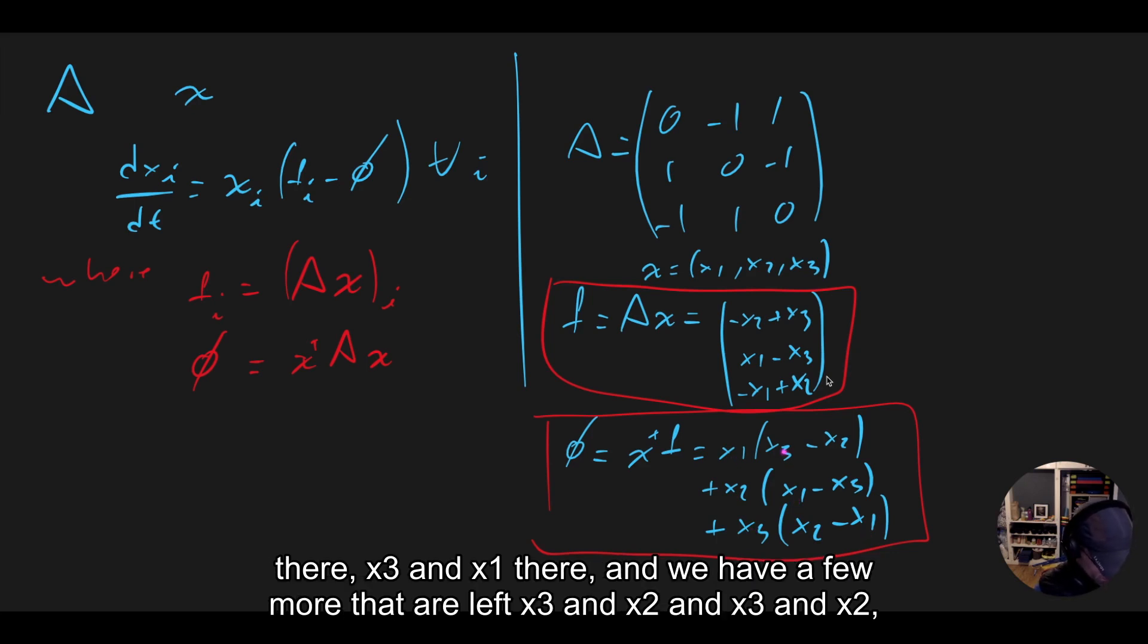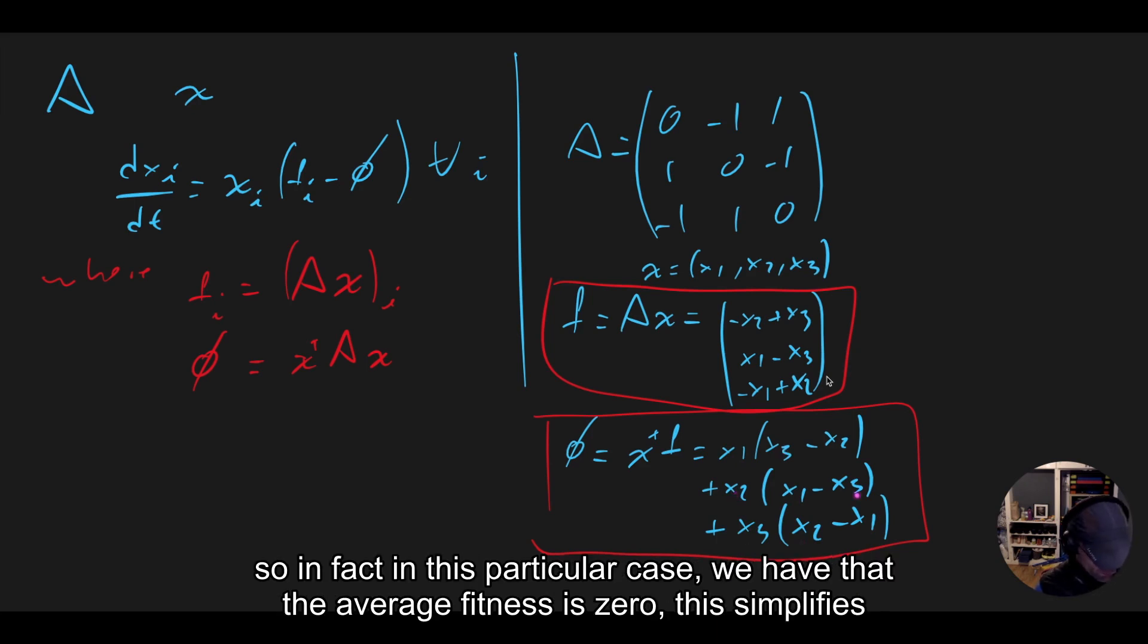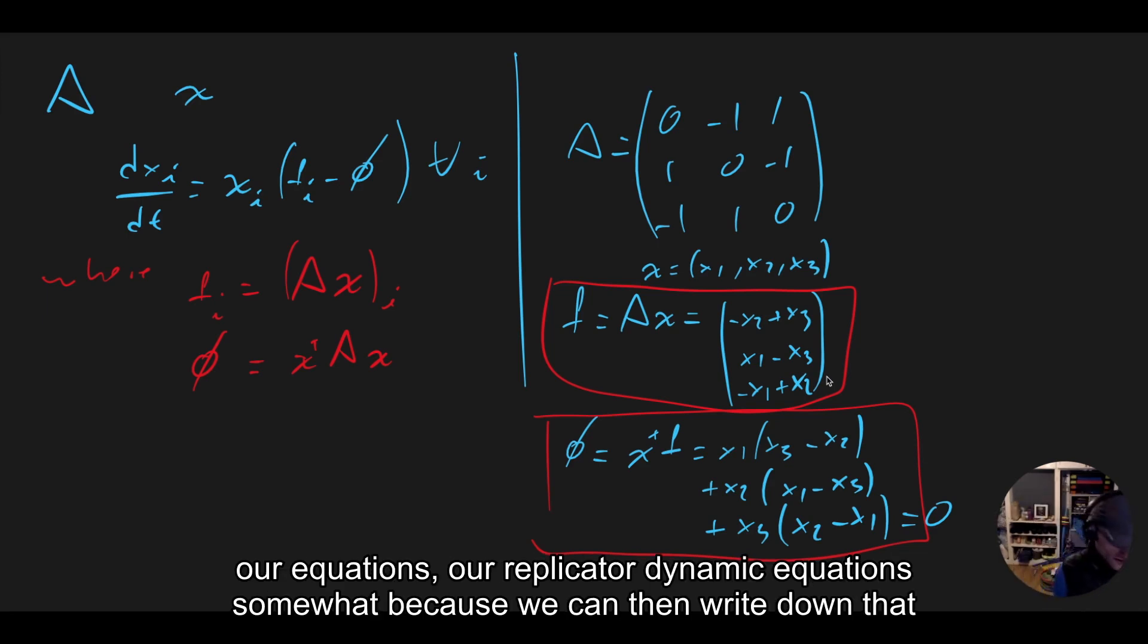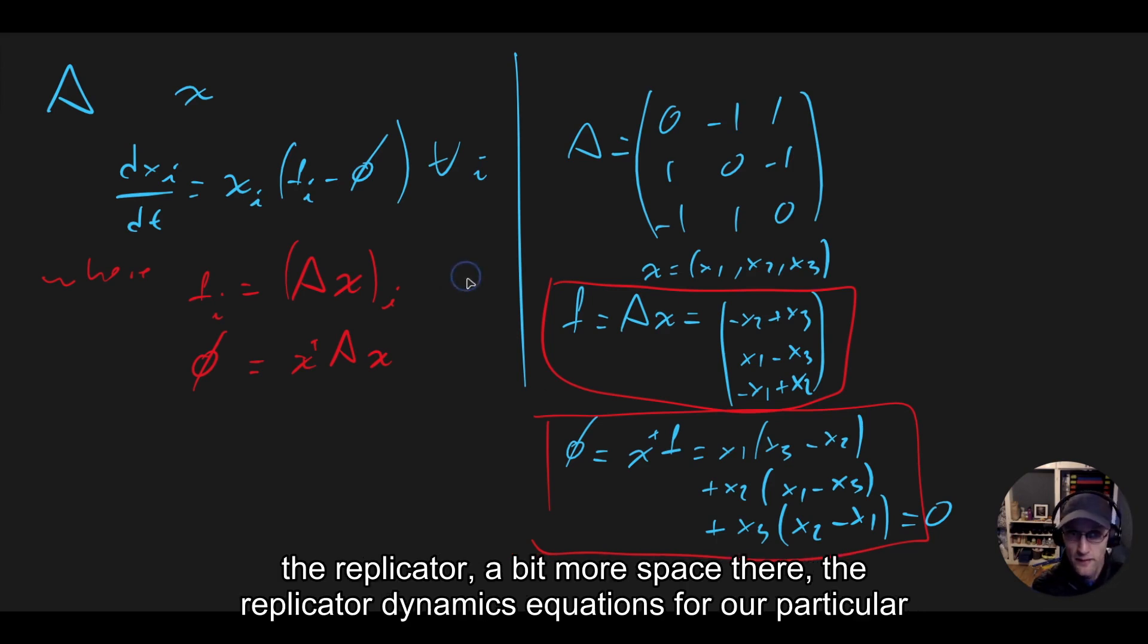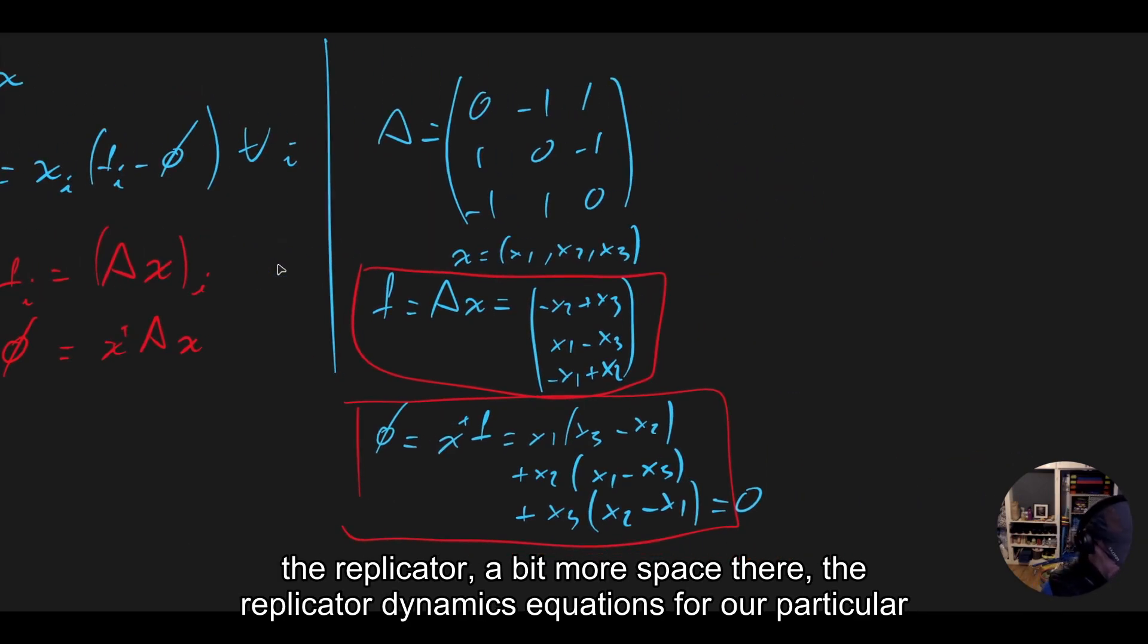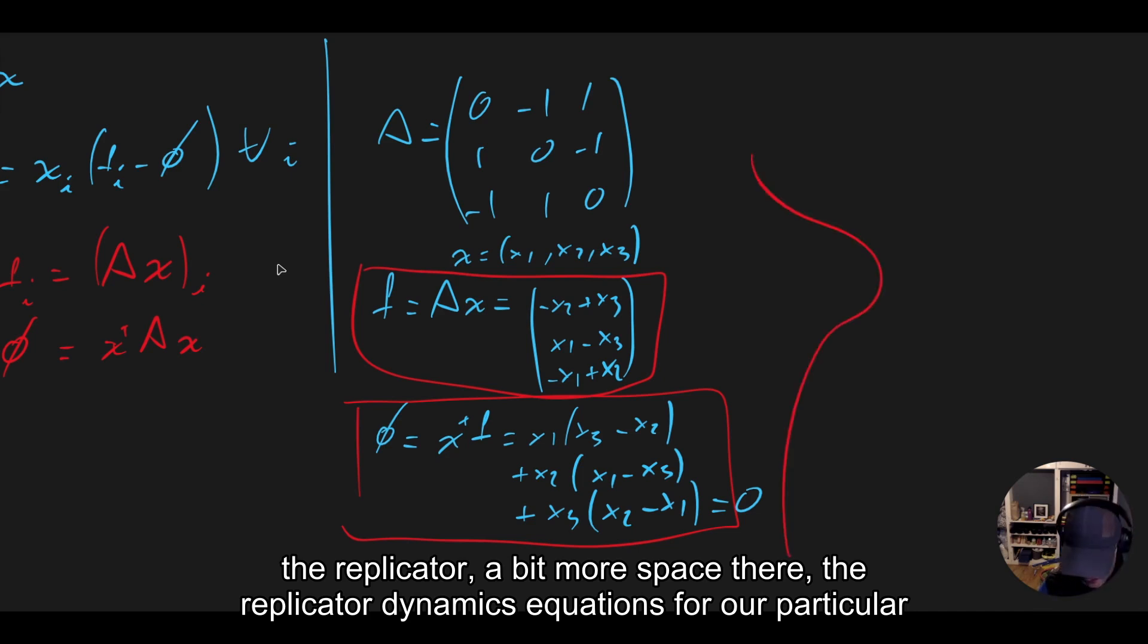And we have a few more that are left, x3 and x2 and x3 and x2. So in fact, in this particular case, we have that the average fitness is zero. This simplifies our equations, our replicator dynamic equations somewhat.